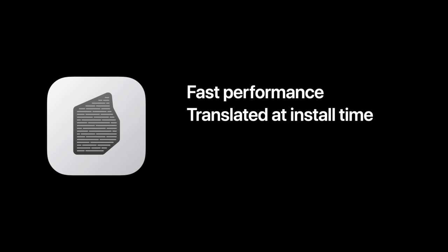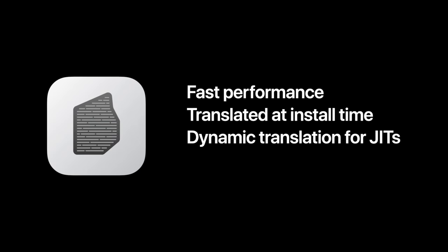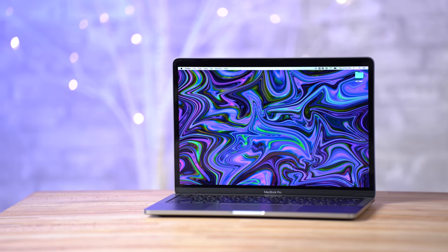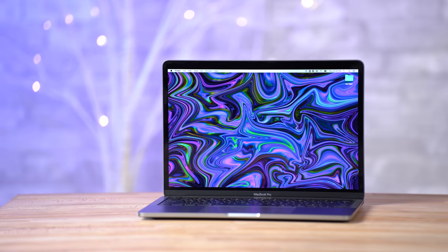Now as for the apps that don't get updated in time, Apple has created Rosetta 2. This is basically a new version of emulation software which automatically translates existing apps to work on the new chips. This means that every single app we have right now on macOS should work on an ARM Mac, even if the developer doesn't touch it at all, and this will all work in the background with no additional steps required.